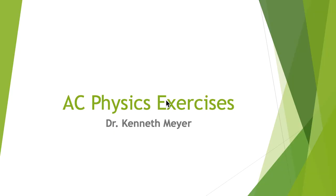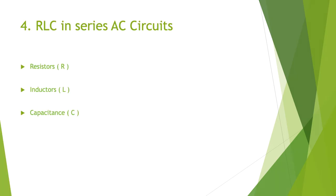Hi, Dr. Ken here with you again. We're up to AC physics exercises number four. In number four, we're looking at resistors, inductors and capacitors — R, L and C — connected together in different series combinations. So resistors in series with resistors, resistors in series with inductors and capacitors, and then resistors, inductors and capacitors all in series with each other.